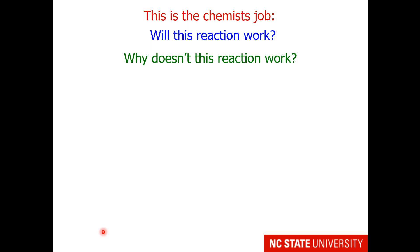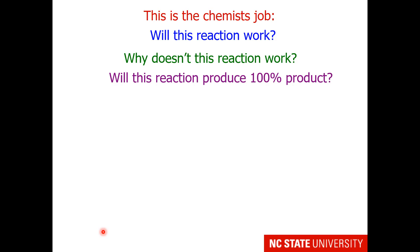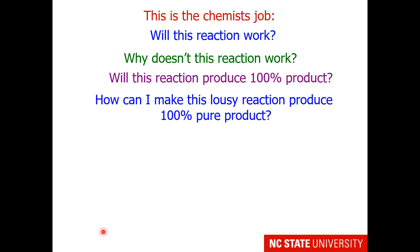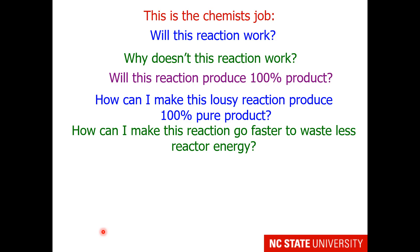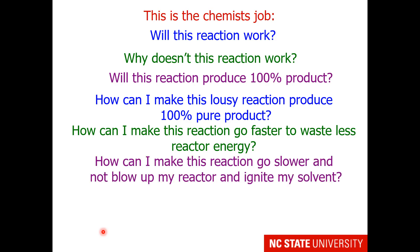Why doesn't this reaction work? Maybe it's a minus-minus and your temperature is too high. Maybe it's a plus-plus and your temperature is too low. That seems to be the first thing a chemist will do — change the temperature. Will this reaction produce 100% product? Not usually. How can I make this lousy reaction produce 100% pure product? We're going to have to employ Le Chatelier's: load one of the reactants with extra amount and take away the product as it's formed. How can I make this reaction go faster and waste less reactor energy? A catalyst would be a good idea. In the polymer industry, we actually had to worry about making our reactions go slower so it didn't get so hot it blew up the reactor and ignited the solvent. The opposite of a catalyst is an inhibitor.